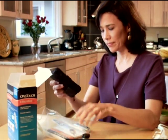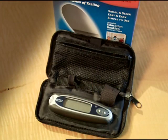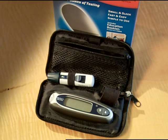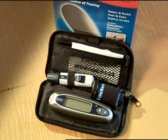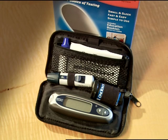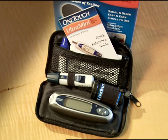The custom carrying case holds everything you need for testing: the OneTouch Ultra Mini meter, OneTouch lancing device, lancets, test strips, and OneTouch Ultra control solution. You can even fit the Quick Reference Guide inside. You should keep this reference tool with your meter at all times.